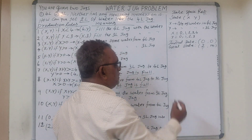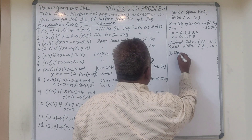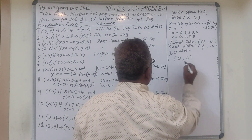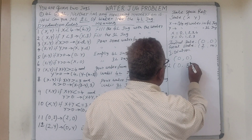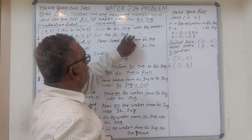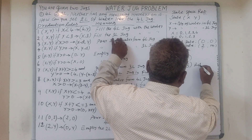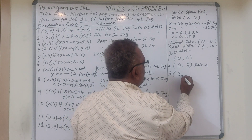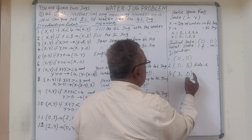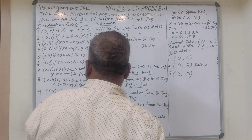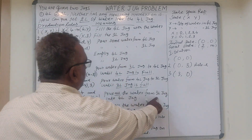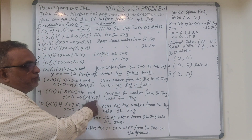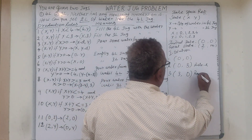We can have 2 different solutions. Let us see the first solution. The initial state is (0, 0). First, we fill the 3-litre jug with full water — that is rule number 2, giving (0, 3). Then we pour all this water into the 4-litre jug using rule number 9 — pour all water from the 3-litre jug into the 4-litre jug — so the 3-litre jug becomes 0, giving state (3, 0).